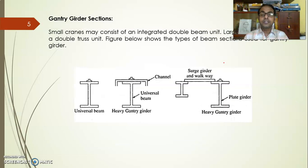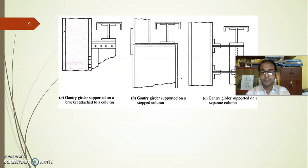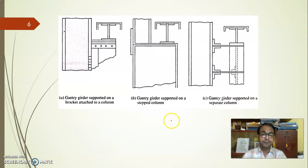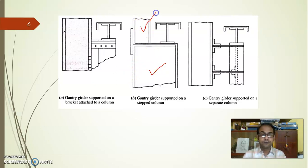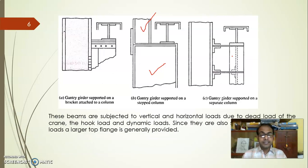There are different types of gantry girder: it may be a simple universal beam section, a built-up section, a plate girder type, or it may be provided with a wide channel section for specific purposes. Sometimes it is also provided with a walkway supported by an additional beam, used for maintenance purposes. The gantry girder may be supported by a stepped column as seen in the general arrangement, by a bracket as shown in the two-dimensional figure, or by an extension hanger.